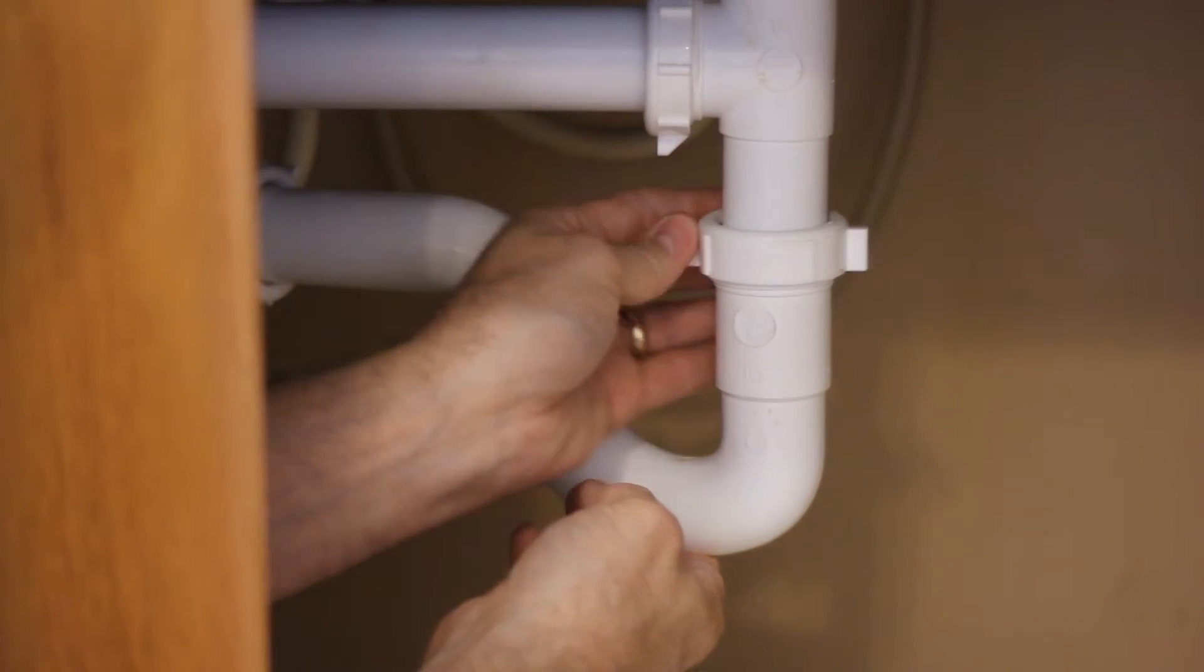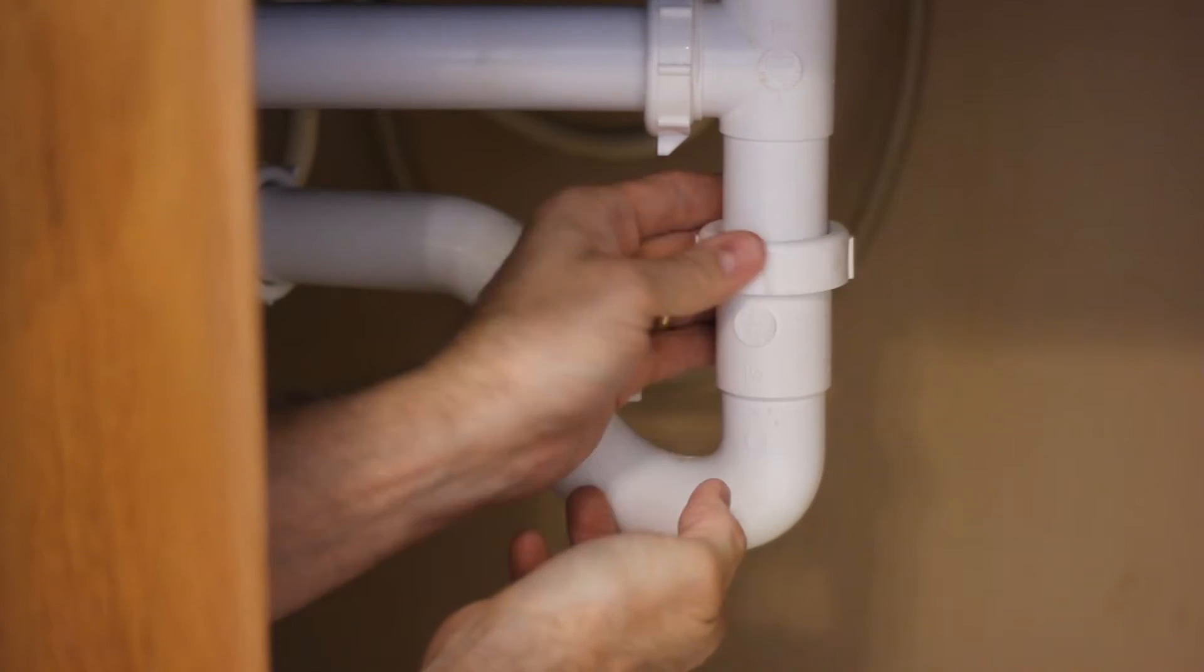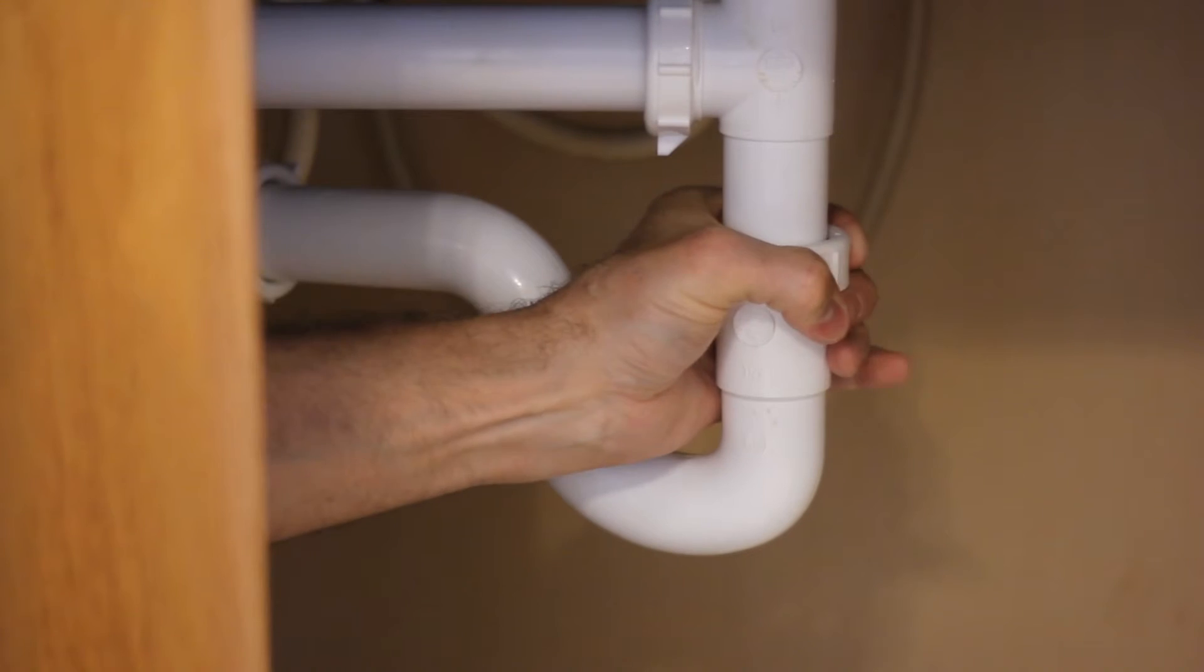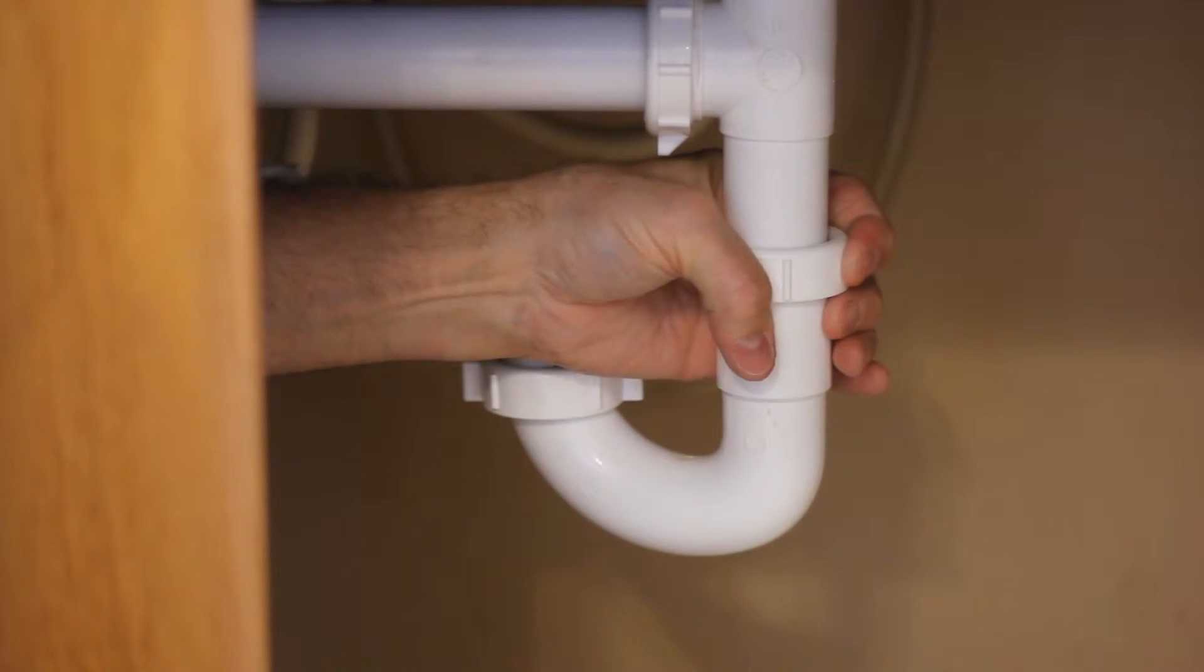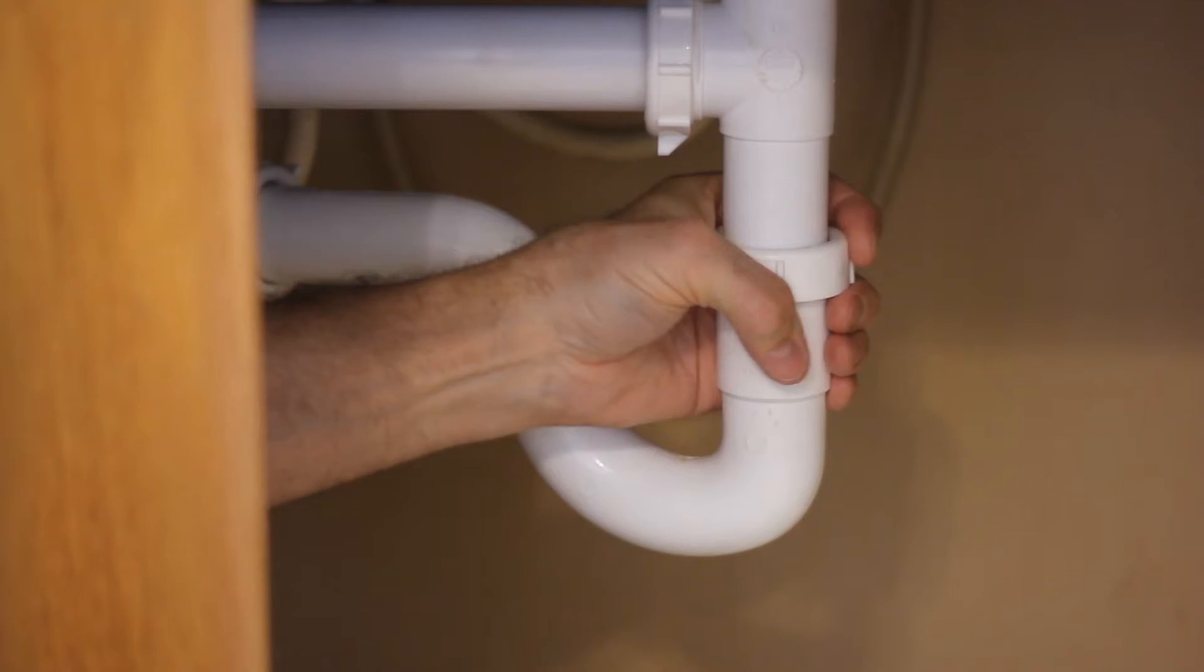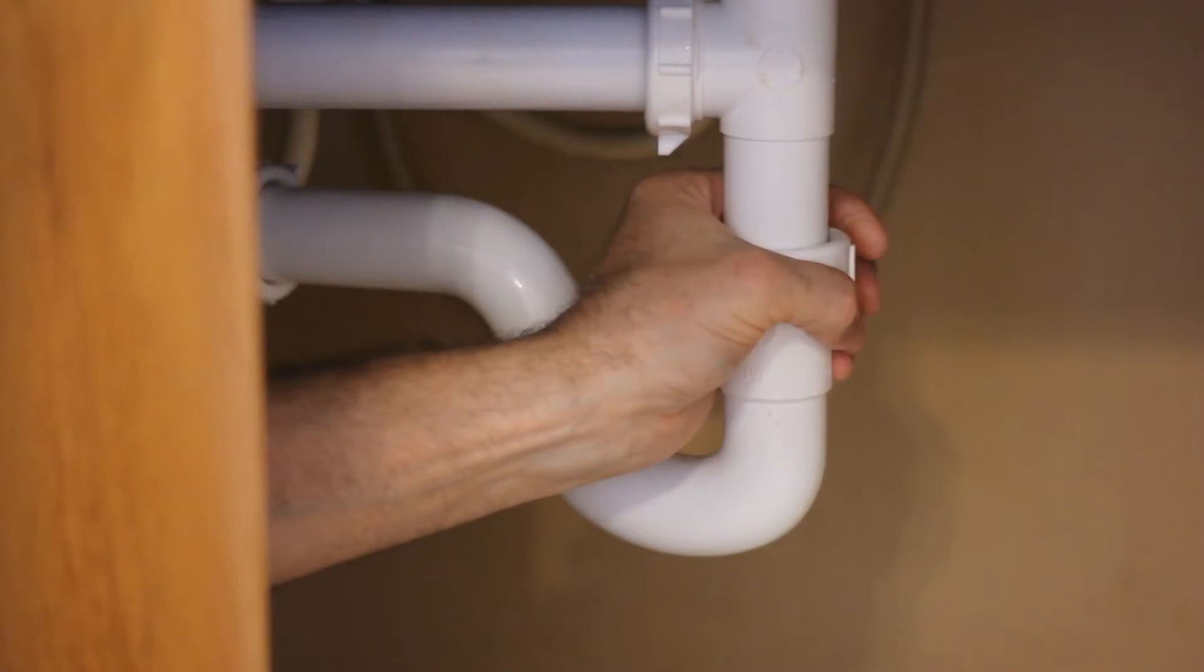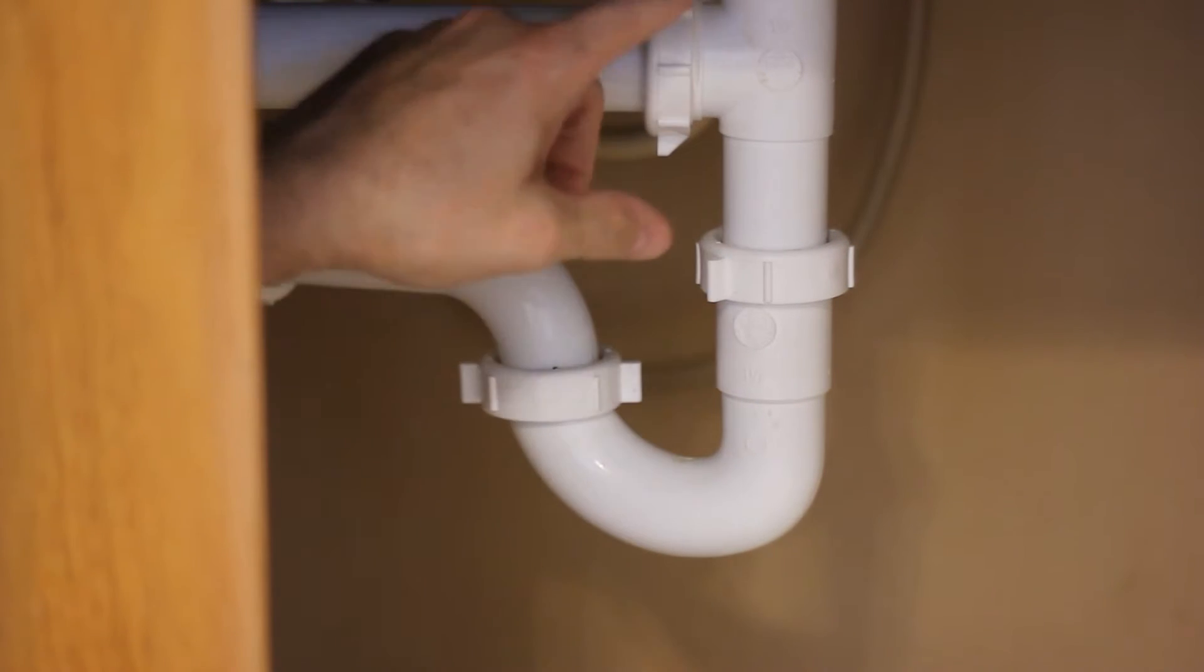Turn it clockwise, or depending on the orientation of the pipe, until you get it tight. You should be able to tighten it up by hand. It should feel a little snug and then maybe give it a little extra turn just to make sure it's snugged up.